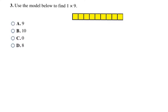Here is another array. This array models the problem one times nine. The side has a length of one and the other side has a length of nine, so it's a one by nine array. Counting up each block — one through nine — since there are nine small blocks, that means one times nine equals nine, which is choice A.